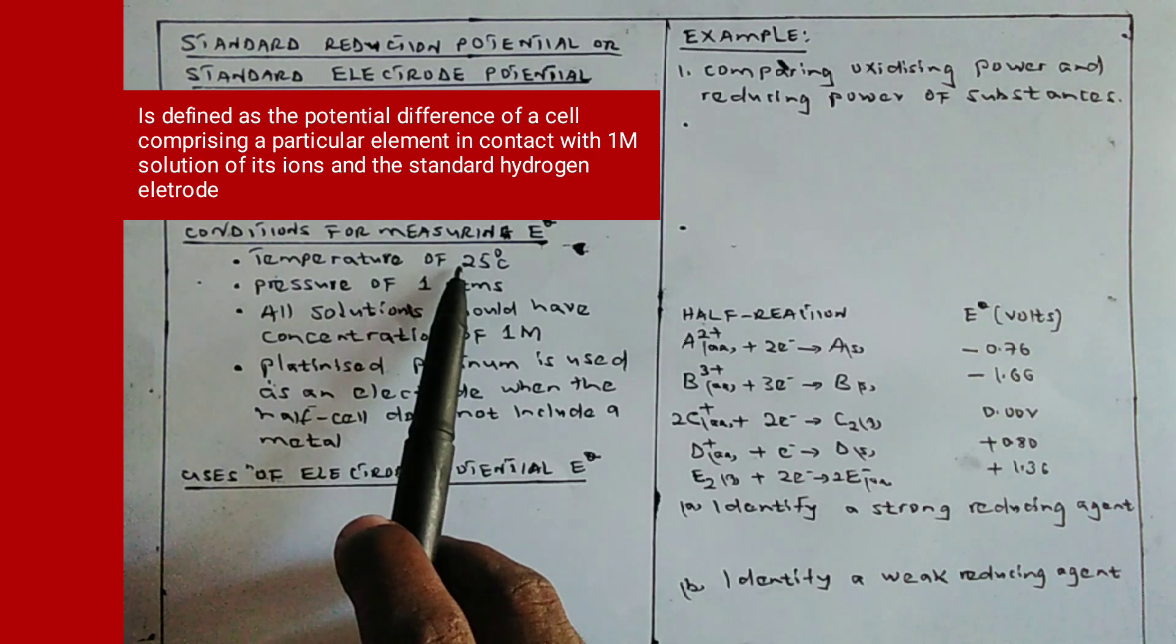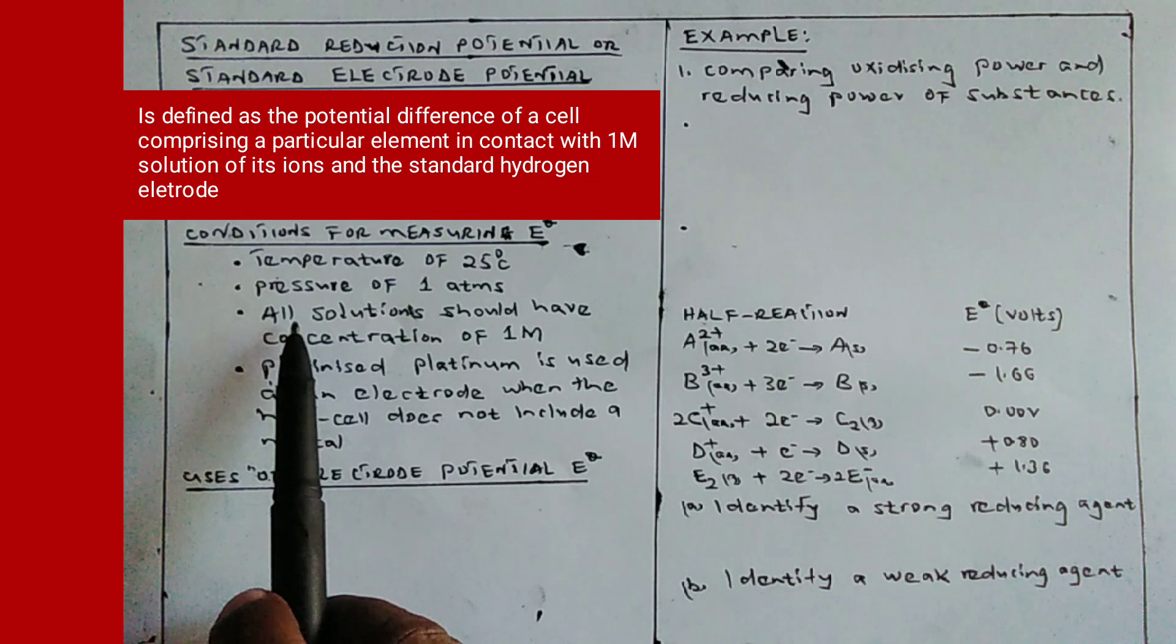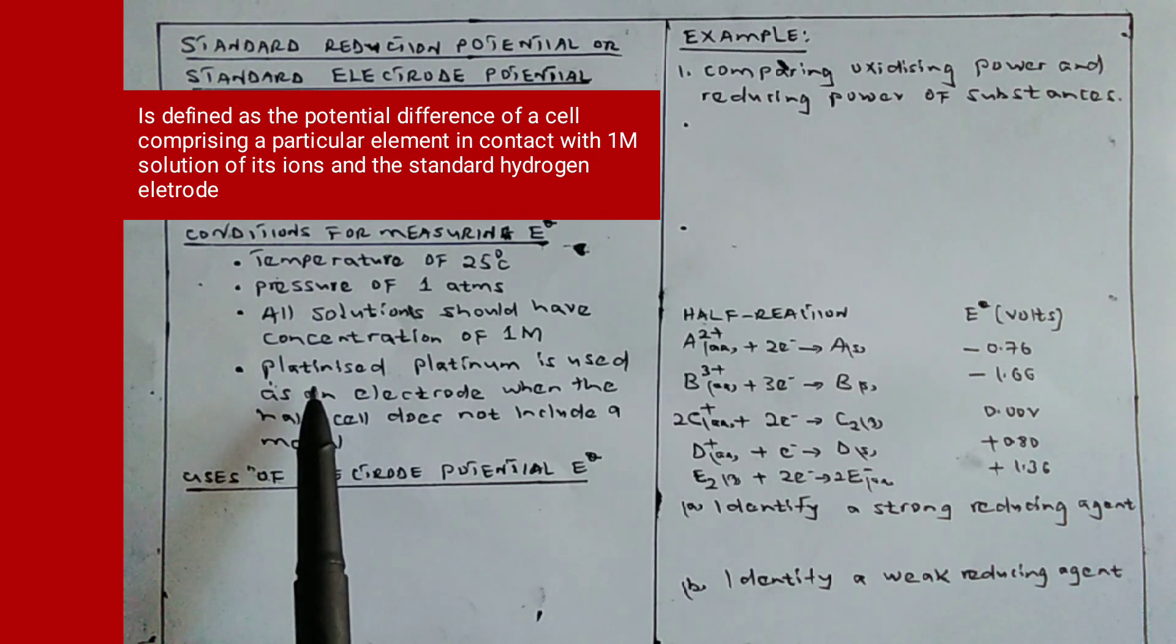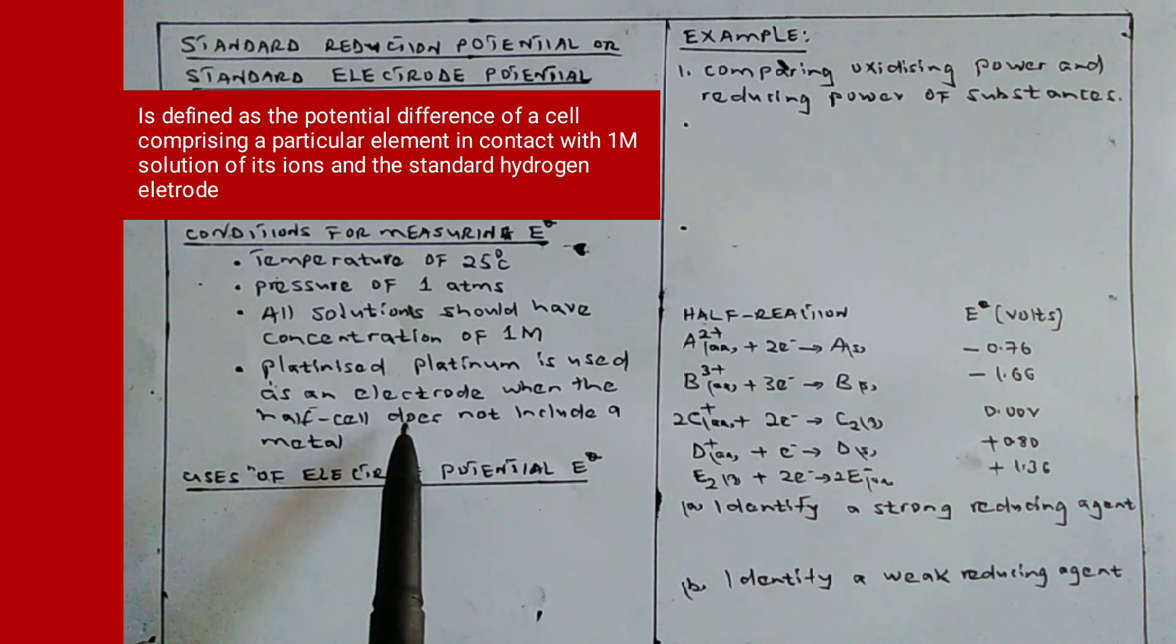To measure the E0 values, we need a temperature of 25 degrees Celsius, pressure of one atmosphere, and all solutions should have concentration of one molar. Platinized platinum is used as an electrode when the half-cell does not include a metal.